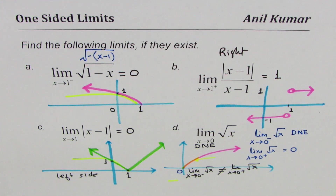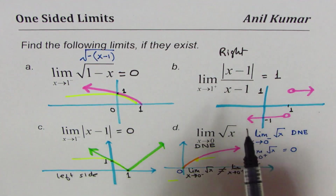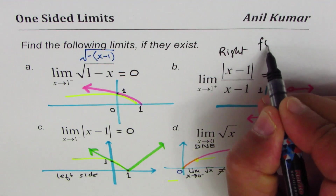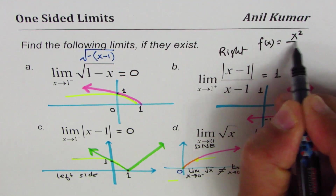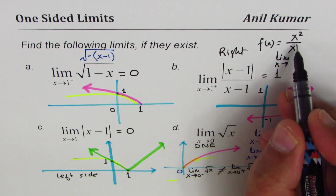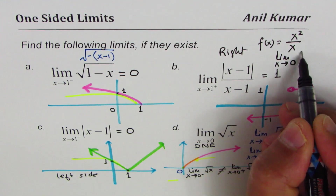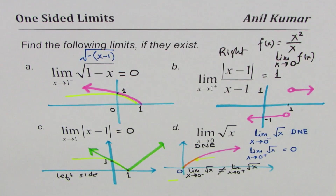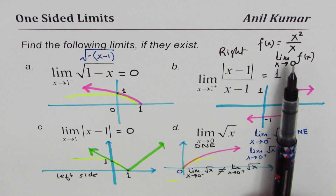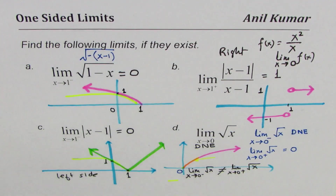Let me give you one question to practice. Find the limit of the function f(x) = x squared divided by x as x approaches 0. Justify your answer using one-sided limits. I'm Anil Kumar and I hope that helps. Thank you and all the best.